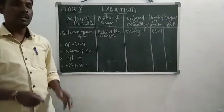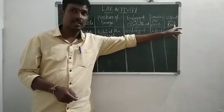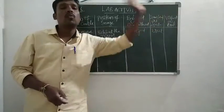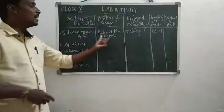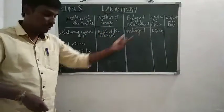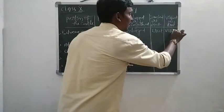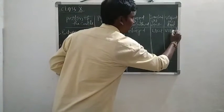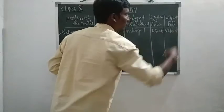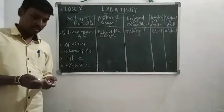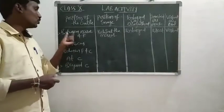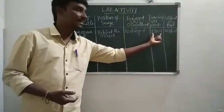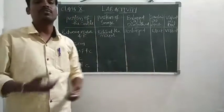So the difference between virtual and real: if any image is formed on the screen, that is called the real image; if any image is formed on a mirror, that is called virtual image. In this situation, the position of the image is behind the mirror, so that is called virtual image. So when placing the object between mirror and F, we get the position of the image behind the mirror, the image is enlarged, erected, and virtual.